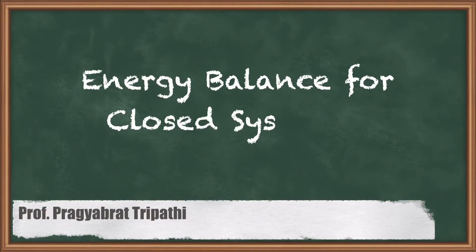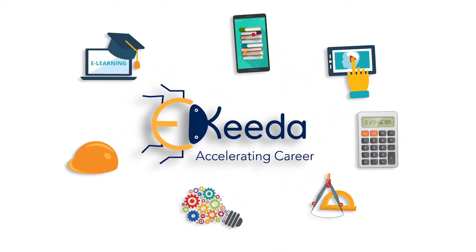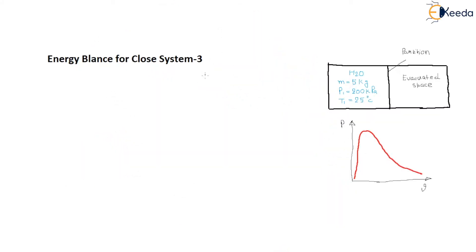Hello, my dear friends. In this video we will learn another example based on energy balance for a closed system. The situation is given: a rigid tank — meaning the volume is fixed — divided into two equal parts. If the total volume is V, then each part has volume V/2.